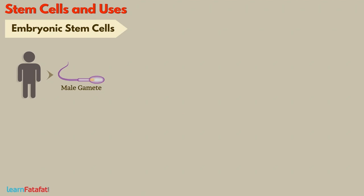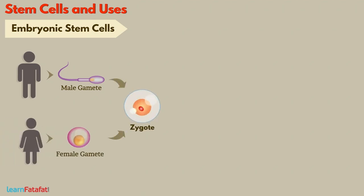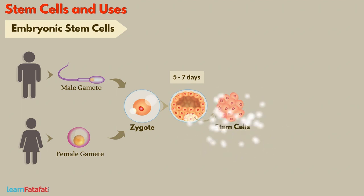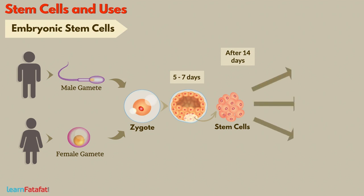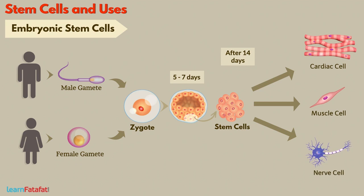Embryonic Stem Cells: The fusion of male and female gametes gives rise to a zygote. At the earliest stage of development, the organism is in the form of a mass of cells, all alike — these are called stem cells. From the 14th day of fertilization, a process called cell differentiation begins, through which the stem cells start getting converted into fully functioning specialized cells.